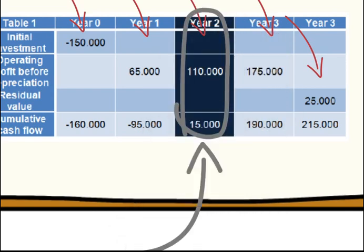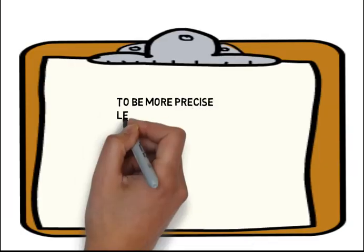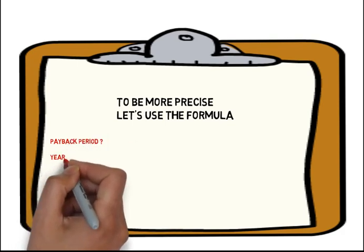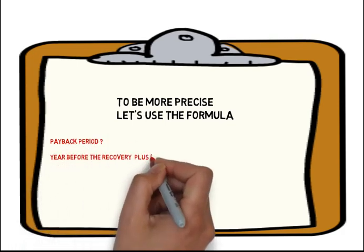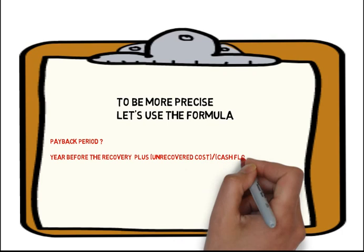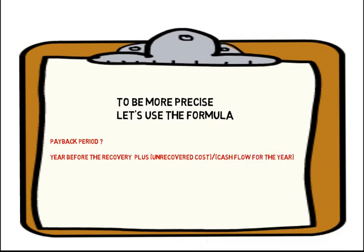But to be more precise, let's use the formula. So payback period equals the year before the recovery plus unrecovered cost divided by cash flow for the year.